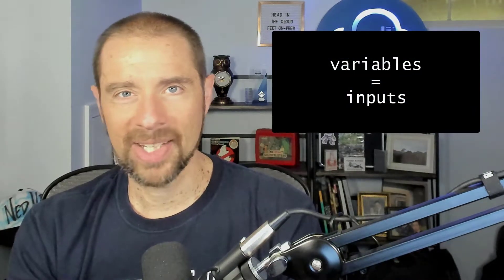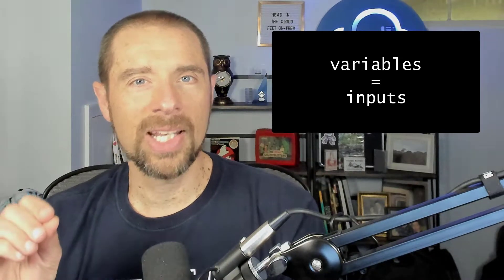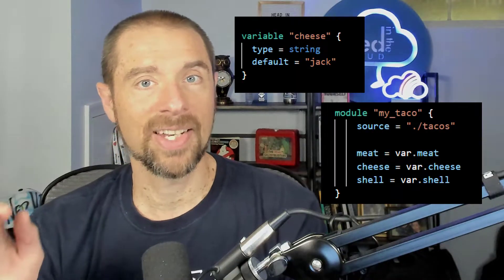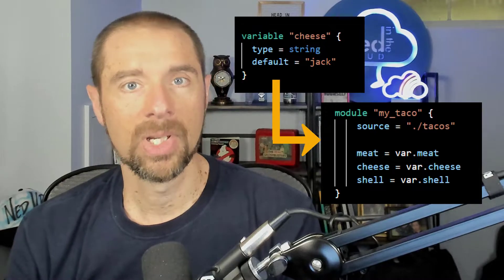Now that we've defined what a module is, what a root module is, and what a child module is — how do you get information into a module, and how do you get information out? Let's break this down. There are two primary ways to get information into a Terraform module, whether that's a root module or a child module. The first way is to use variables. When you hear variables in the context of Terraform, think inputs — these are your inputs into the module. Variables can be used in the root module or in child modules, so when you hear variables, think inputs.